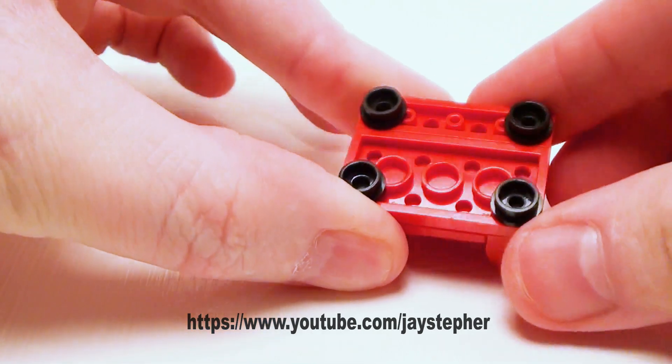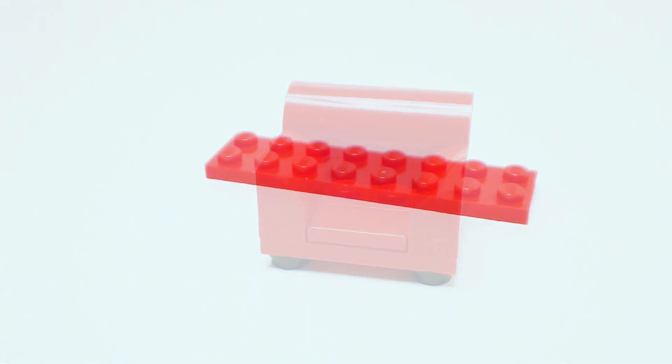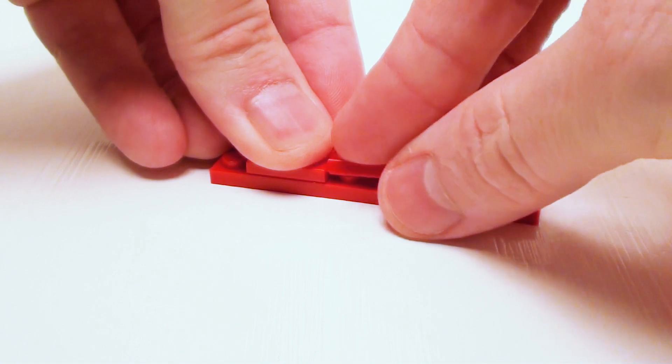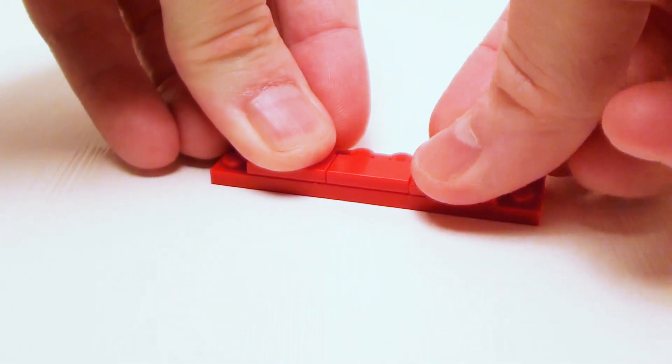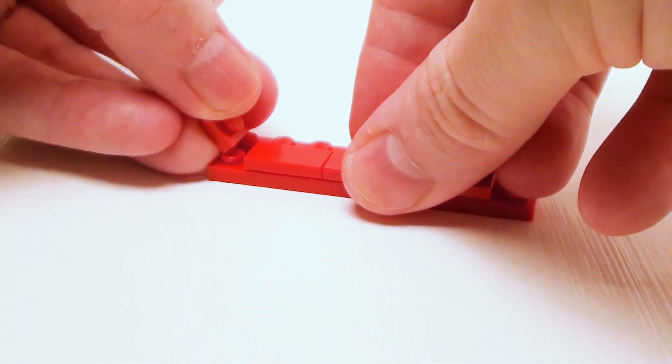Now let's start with the comfy sofa with a 2 by 8 plate. In the bottom center I'm going to set down three 1 by 2 flat tiles and a pair of 1 by 1 plates on both sides of the tiles.